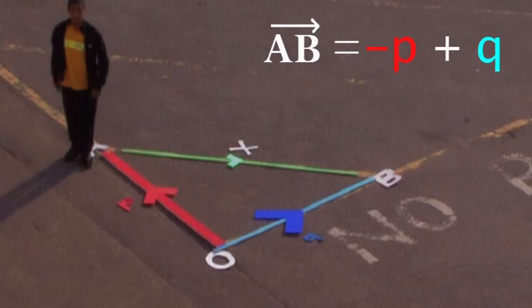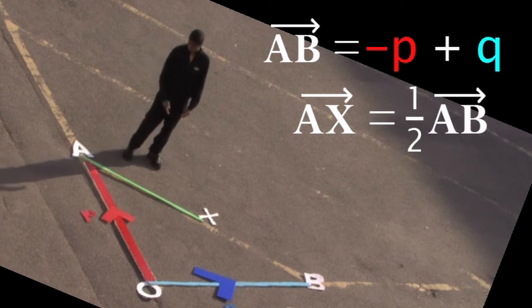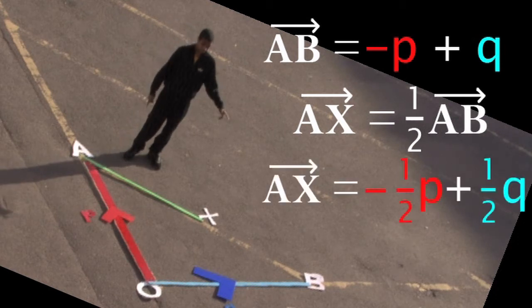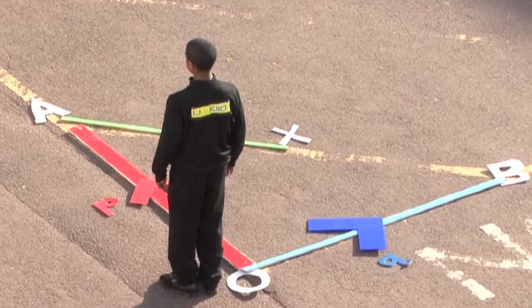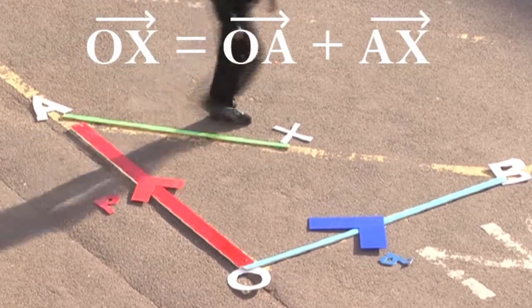So if this is a and this is b, then a to b is just minus p plus q. If x is the midpoint, then a to x is half the journey from a to b. So that's minus a half p plus a half q. To get from o to x just go via a. That's o to a add a to x. Simplify the p's and that's a half p plus a half q.